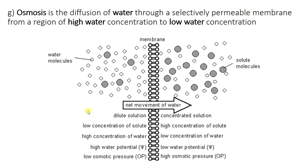The next way that things can move in and out of cells is through something called osmosis. Osmosis is the diffusion of water through a selectively permeable membrane from a region of high water concentration to low water concentration. The key word here is clearly water.